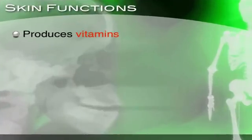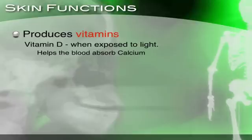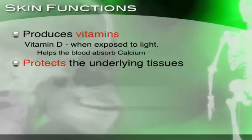Next function: the skin produces vitamins — specifically Vitamin D when exposed to sunlight. Vitamin D helps the blood absorb calcium, and calcium has a number of functions in the human body that we'll talk about later in this chapter and in other chapters. The fourth function: it protects the underlying tissues.